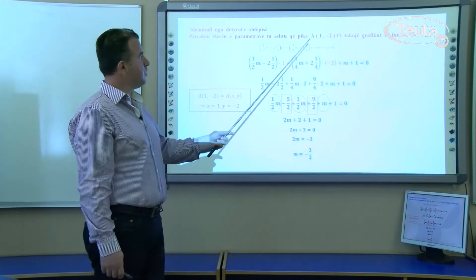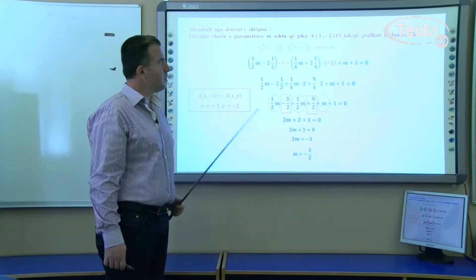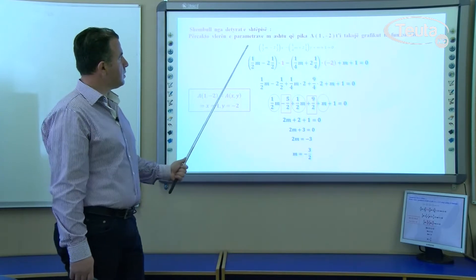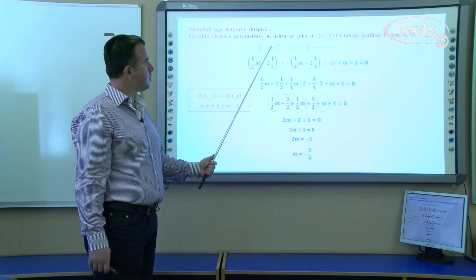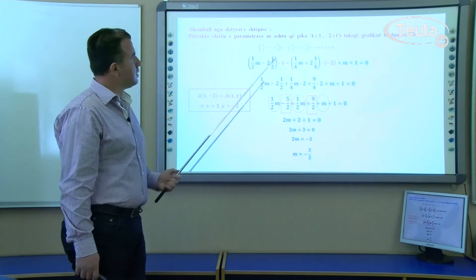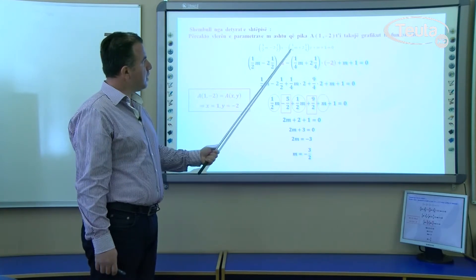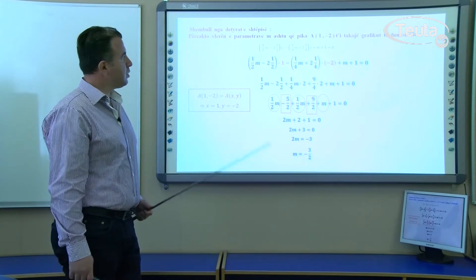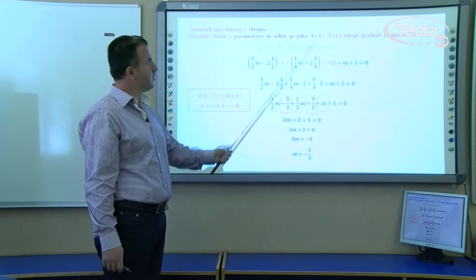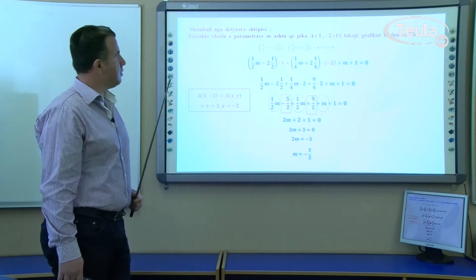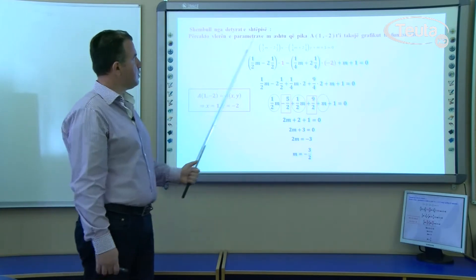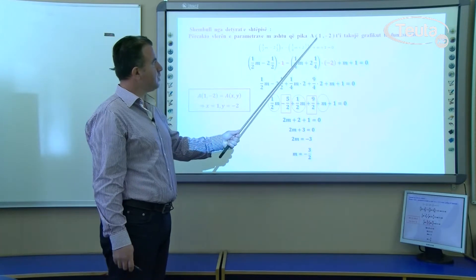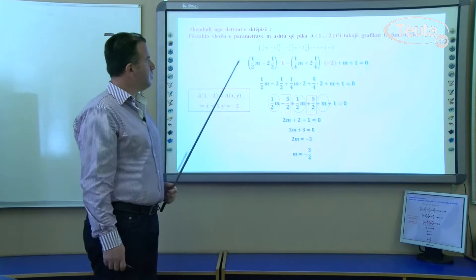Pika A me koordinata (1, -2) t'i takoj grafikut të funksionit. Kemi pasur: (1/2M - 2)·(1/2) shumëzuar me (x - 1) + (4M + 2)·(1/4) shumëzuar me (y + M + 1) = 0. Atëherë, në vend të x dhe y vendosim koordinatat e pikës, pra x = 1, y = -2.